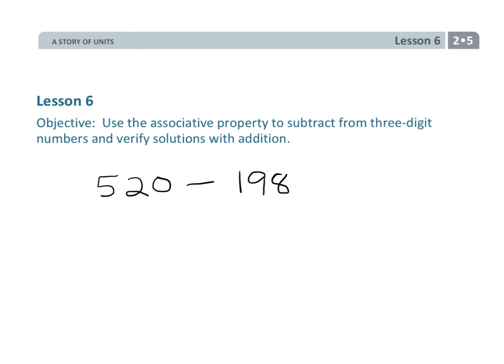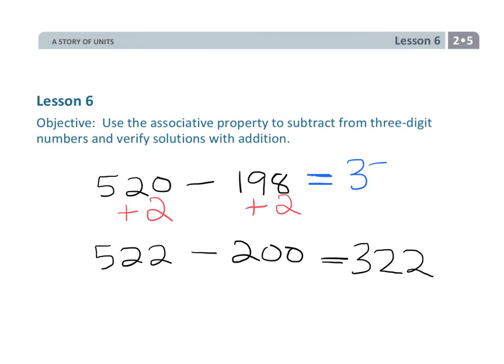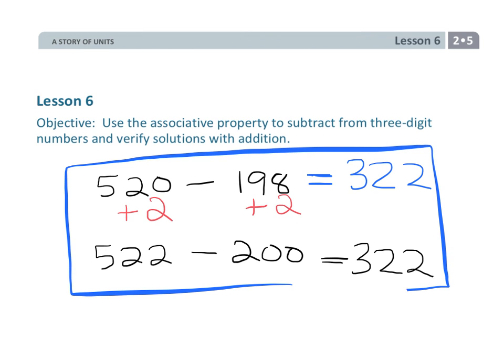So let's bump him up so that he is a milestone, which means we have to bump this guy up as well. So that becomes 522 minus 200. And now 522 minus 200 is much easier to subtract than 520 minus 198. So when we subtract, we end up with 322, which means this answer is also 322. So that's kind of an alternate way to show what's going on if you're struggling with the tape diagram.